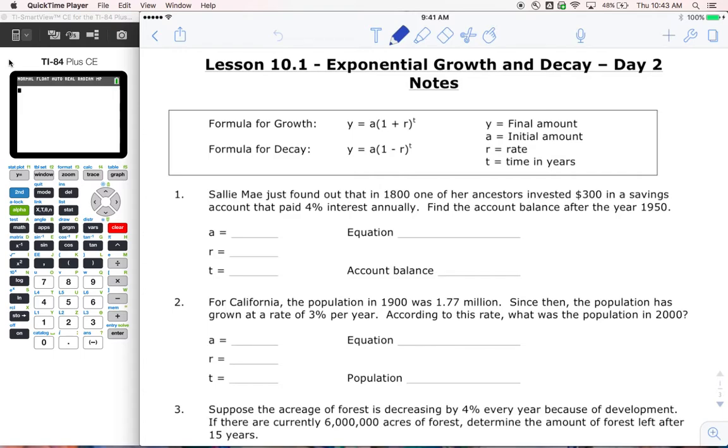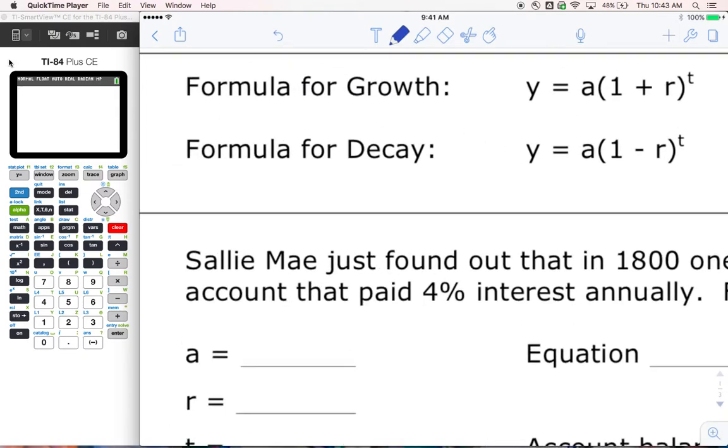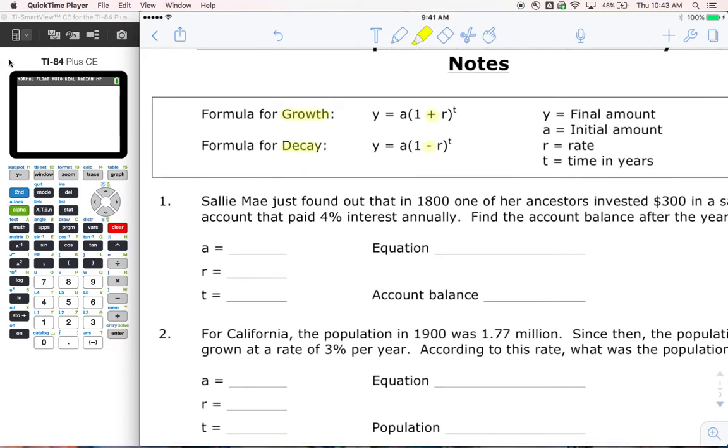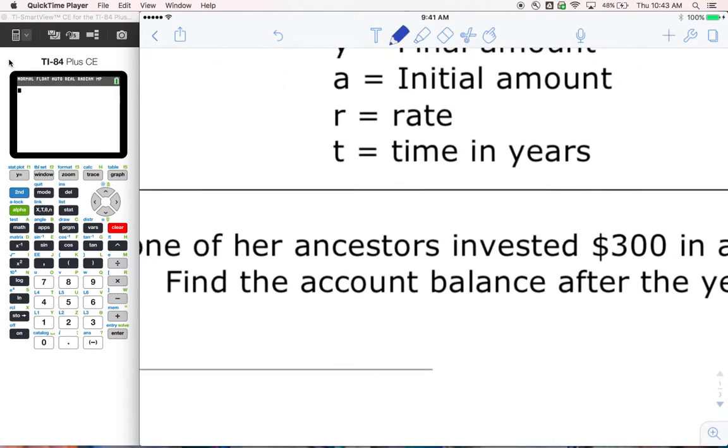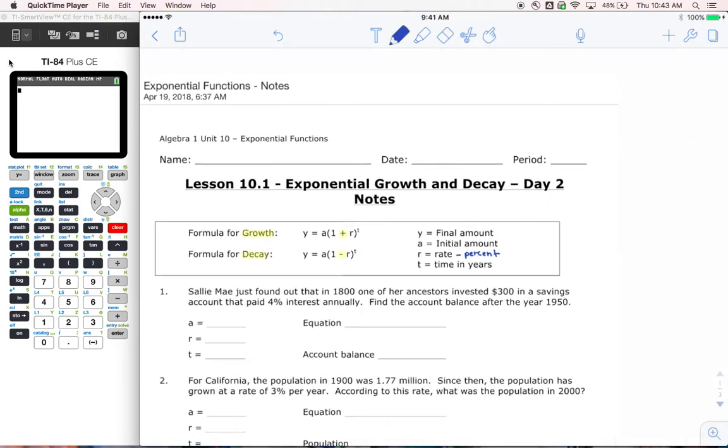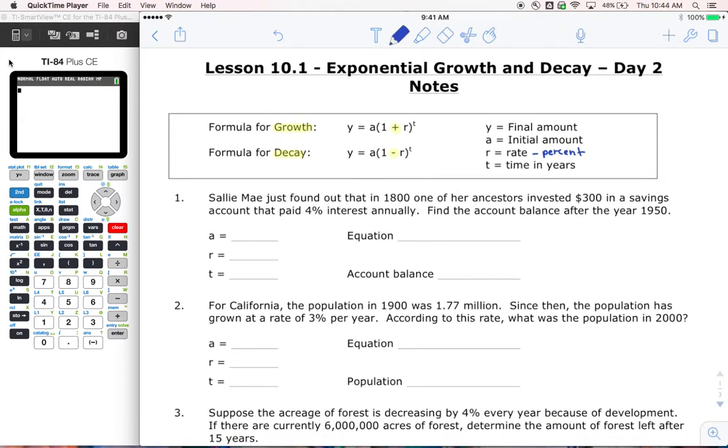So here is our formula for growth and our formula for decay. The most important thing to notice before I start talking about what this is, is that in the growth formula we have a plus sign, and the only difference for the decay formula is that we have a minus sign. That's the only difference in these formulas. A is still the same, we're still talking about the initial amount. Now this time we're talking about R as in rate - that's my percent. And then T as in time in years.